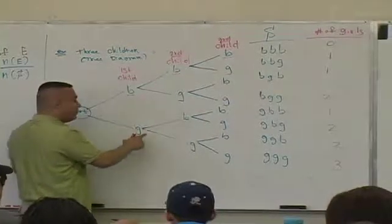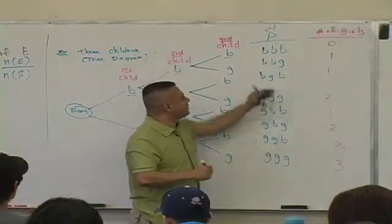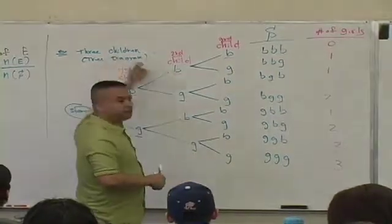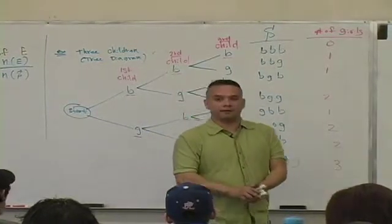Same thing for the bottom one where the first outcome was a G. So this method called tree diagram generates every possible outcome associated with having three children. You okay with that?